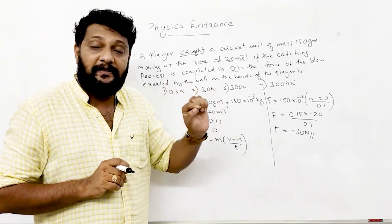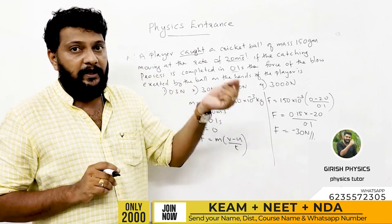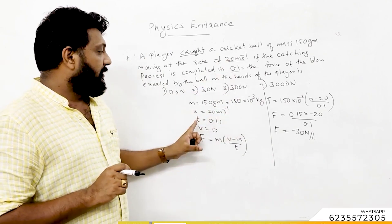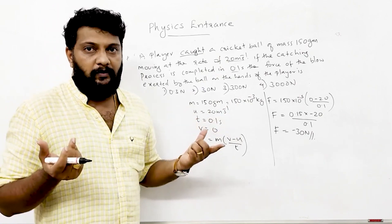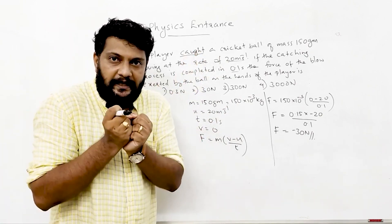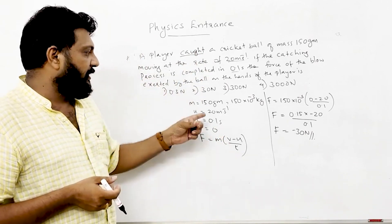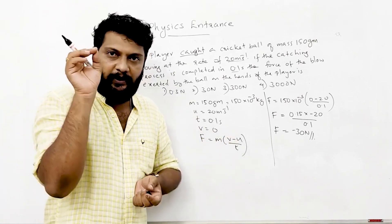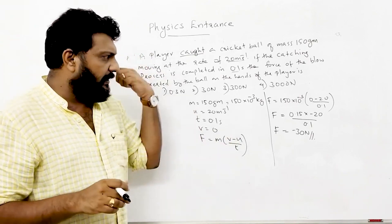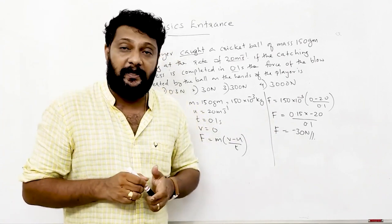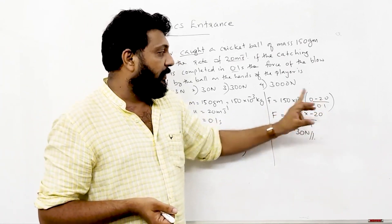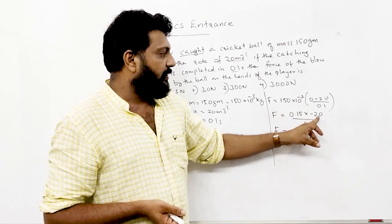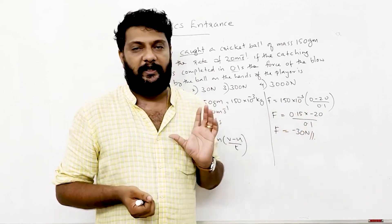Mass = 150 g = 150 × 10⁻³ kg, u = 20 m/s, t = 0.1 seconds, v = 0. Using F = m(v - u)/t: F = 150 × 10⁻³ × (0 - 20) / 0.1 = 0.15 × (-20) / 0.1 = -30 Newton.